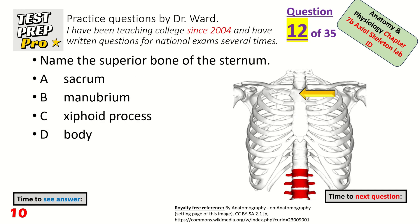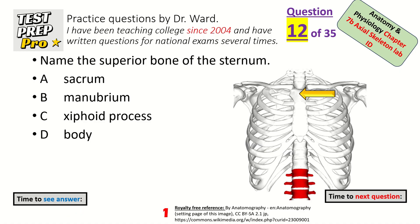Name the superior bone of the sternum — it's one of three bones of the sternum, it's the top one. Manubrium.